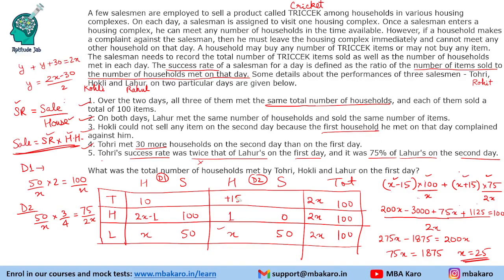With X equal to 25, Day 1 for Tohuri is X minus 15, which is 10, and Day 2 is 40 households. Lahur meets 25 and 25. Hockley meets 49 on Day 1 and 1 on Day 2. Total households are 50 for each. For Tohuri's sales: Day 1 is 10 into 4 success rate equals 40 items sold; Day 2 he sells 60 items. We can now fill the complete table.